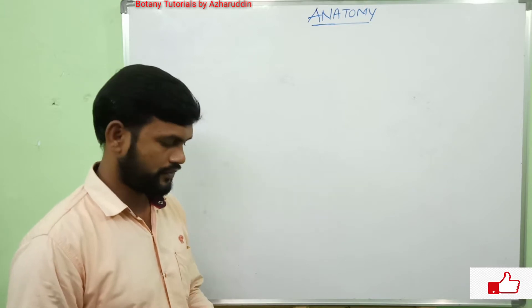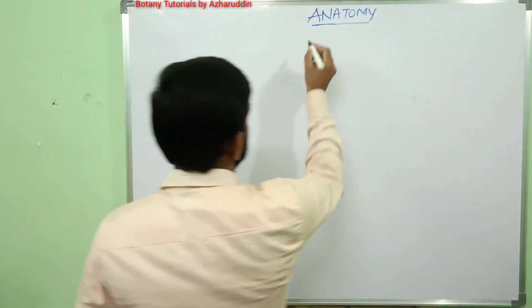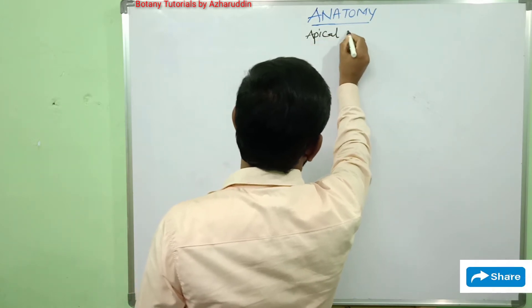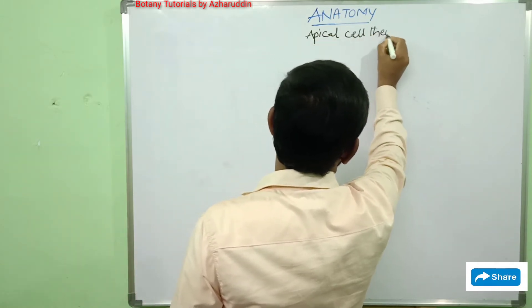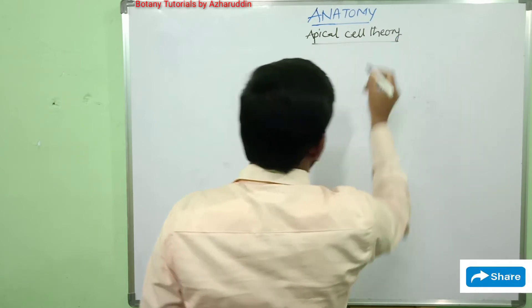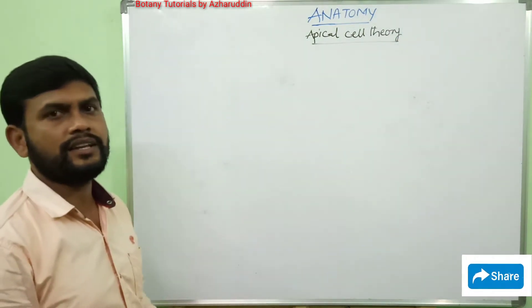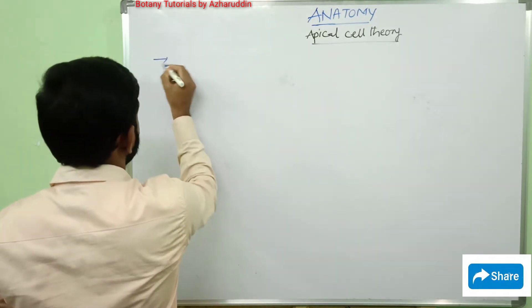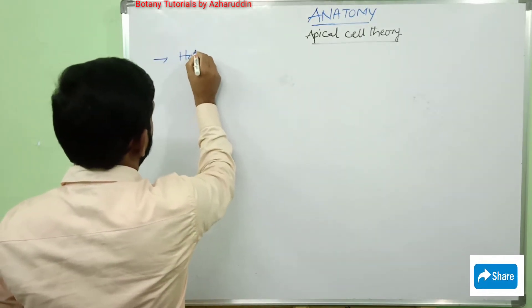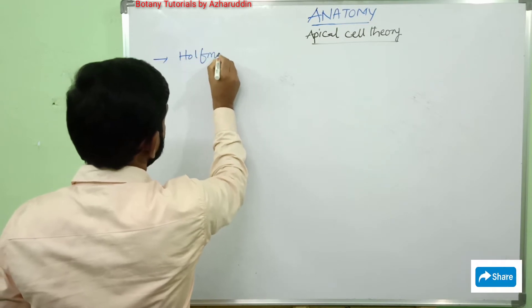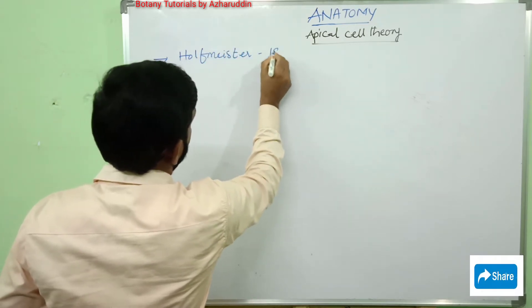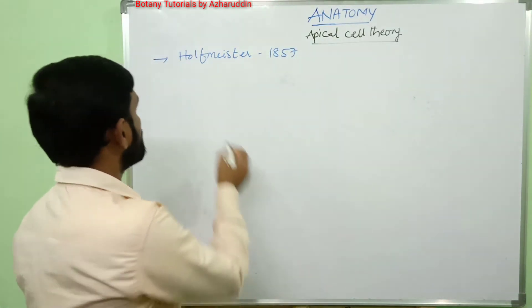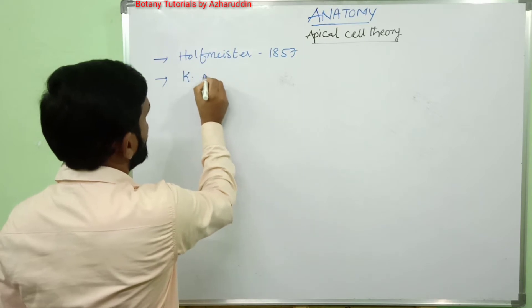The first one is the Apical Cell Theory. This theory was proposed by Hoffmeister in the year 1857, and it was supported by Karl Nagel in the year 1878.